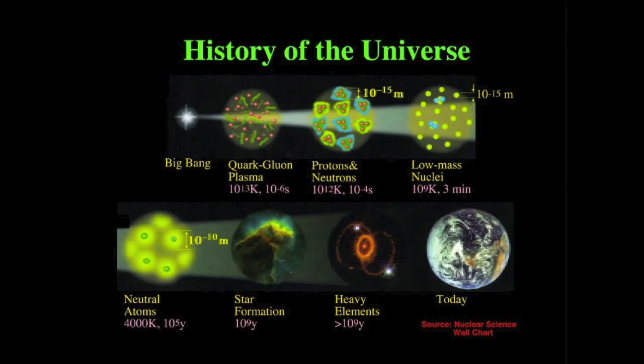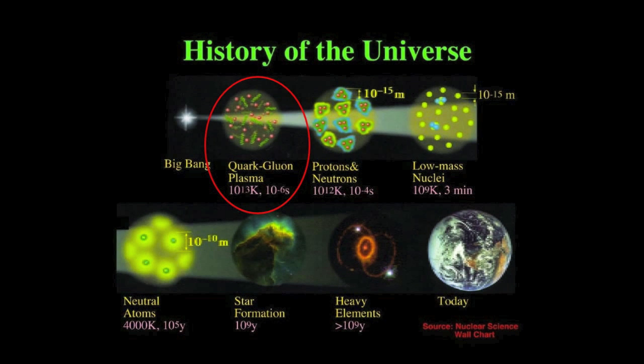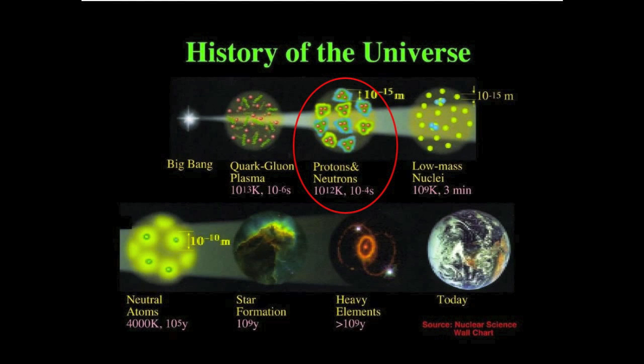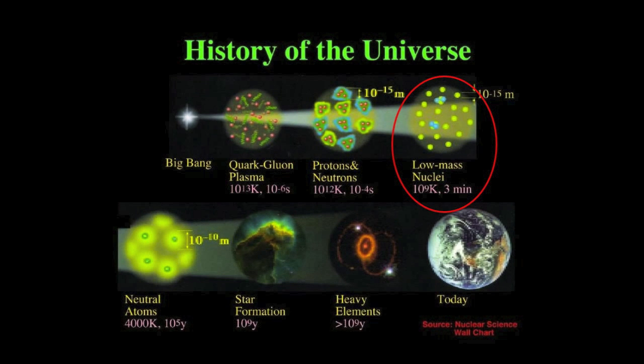There are pretty pictures in this image, each representing an important stage in the history of the universe. Only one microsecond after the big bang, the entire universe was a dense plasma of quarks and gluons. At barely 100 microseconds, quarks and gluons have already condensed into protons and neutrons. Fast forward 3 minutes, and that's the very first time the low mass nuclei were ever created.